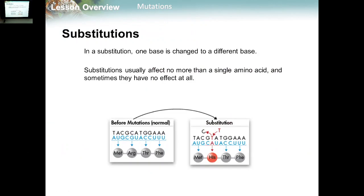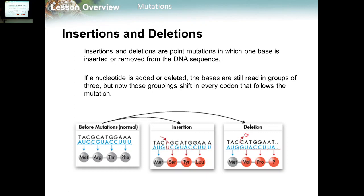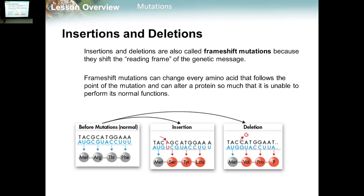To summarize: substitution usually affects one single amino acid, and sometimes has no effect. For insertion and deletion, if a nucleotide is added or deleted, the bases are still read in groups of three, causing what is known as a frameshift mutation. Frameshift mutations shift the reading frame of the genetic message and can change every amino acid that follows the point of mutation, altering a protein so much that it is unable to perform its normal function.